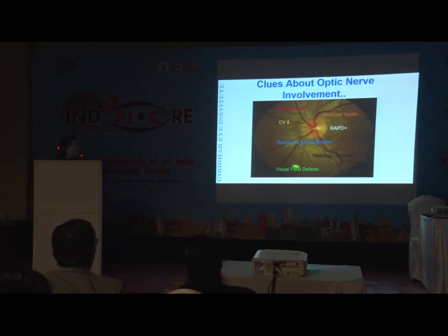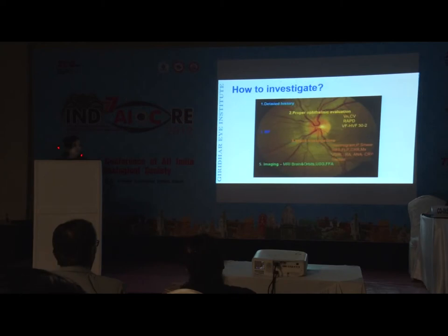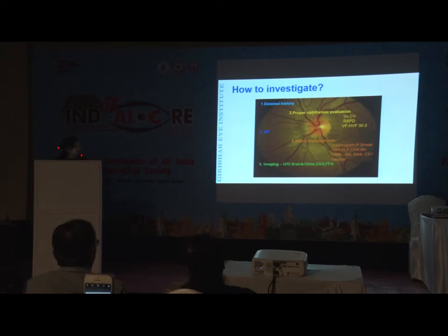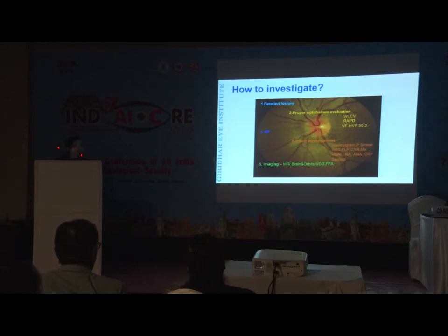Other ancillary tests like reduced light brightness sensitivity and reduced contrast will help you, and visual field defect documentation is also very important. For investigation, take a detailed history for clues to etiology, do a proper ophthalmic evaluation with specific emphasis on optic nerve function tests, and check vitals especially BP and blood sugars.